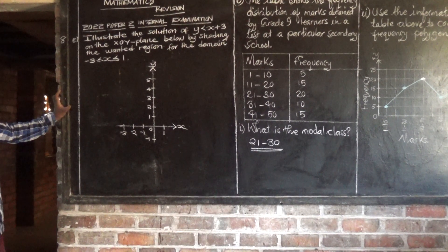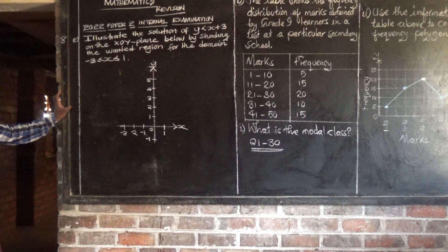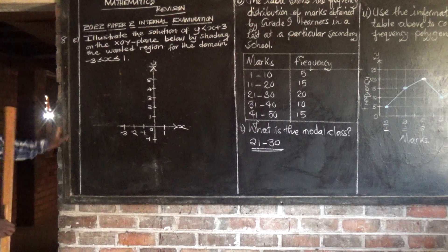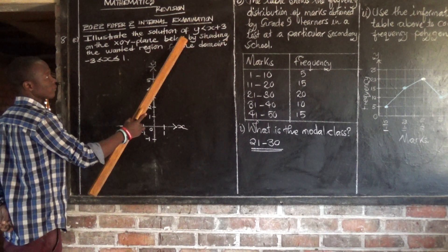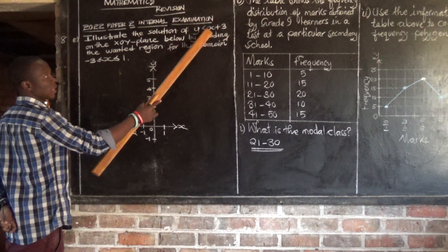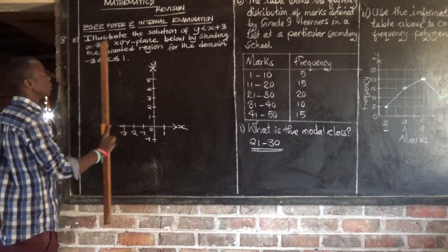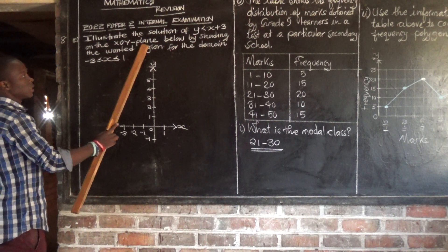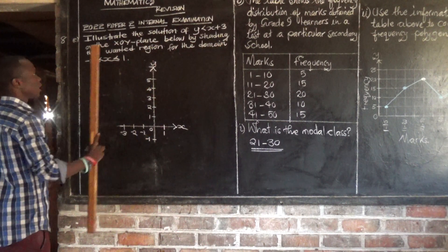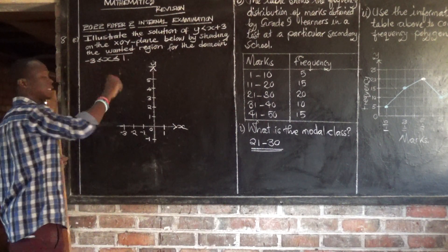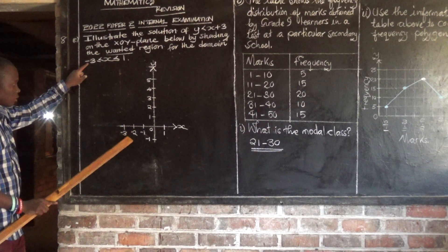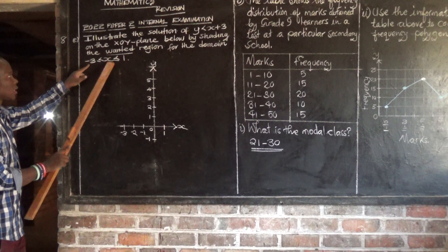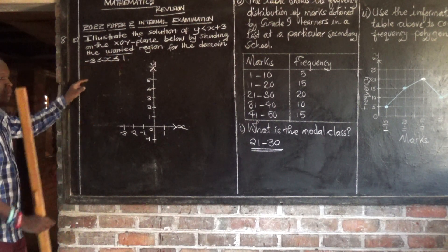Let's look at the last question of this paper, which is question 8. Illustrate the solution of y is less than x plus 3 on the x-y plane by shading the wanted region, for the domain negative 3 is less than or equal to x, less than or equal to 1.